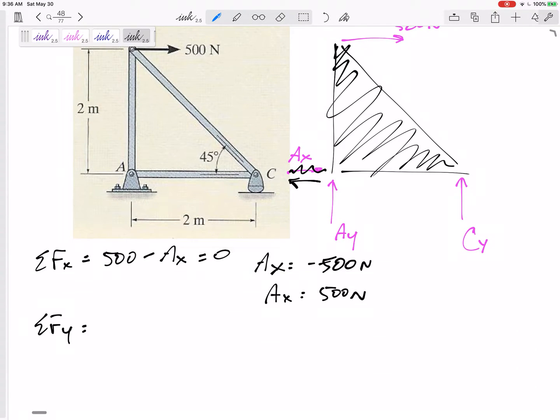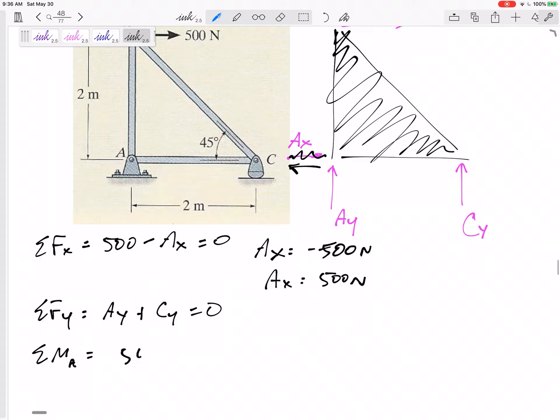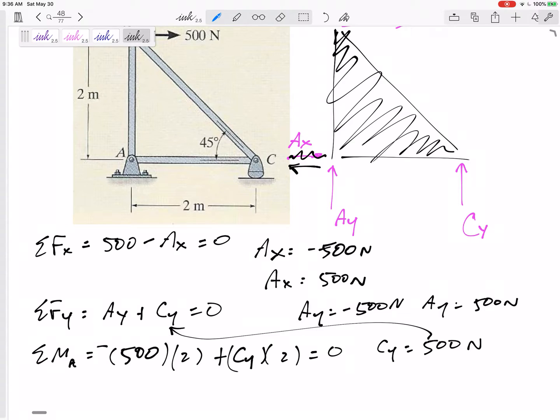Summing the forces in Y, I've got Ay plus Cy equals zero. Let me move on, summing the moments. I think I want to sum my moments about A. Ax goes straight through it, Ay goes straight through it. 500 is creating a negative and Cy is creating a positive. Set that equal to zero, Cy is positive 500. Plug that back in up here, Ay negative 500, Ay is 500 newtons that way.